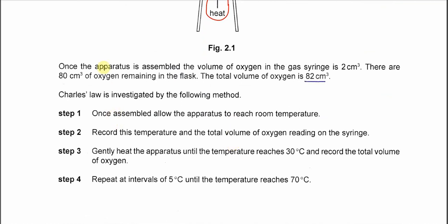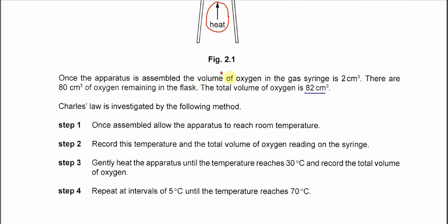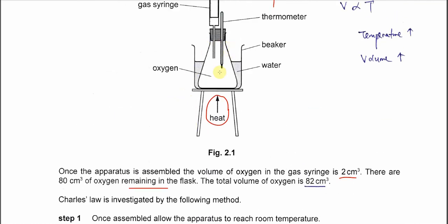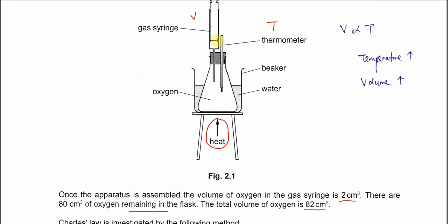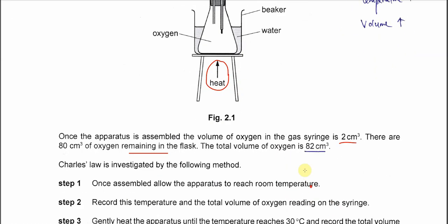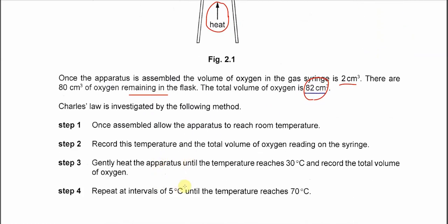Once the apparatus is assembled, the volume of oxygen gas in the gas syringe is 2 cm³. There are 80 cm³ oxygen remaining in the flask. Total volume of oxygen is 82 cm³. Charles' Law is investigated by the following method. Once the setup is assembled, allow the apparatus to reach room temperature. Record this temperature and the total volume of oxygen before we heat it.